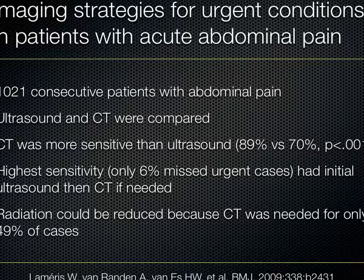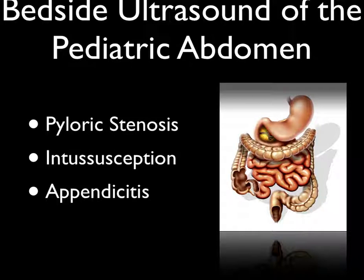A strategy suggested by Lameris in 2009: what if we used ultrasound first and then CT scans? This was 1,021 patients for the diagnosis of urgent conditions. While CT was significantly more sensitive than ultrasound, the overall highest sensitivity used a combined approach — initial ultrasound then CT — and this was able to reduce radiation by 50%. So if we got better with ultrasound, especially in kids, we could avoid the need for CT scans about half the time. I'm going to go through how we use it in the pediatric abdomen for three potential diagnoses: pyloric stenosis, intussusception, and appendicitis.